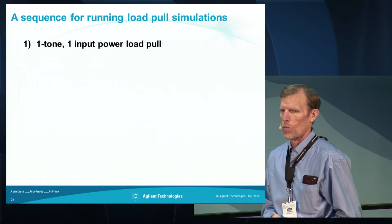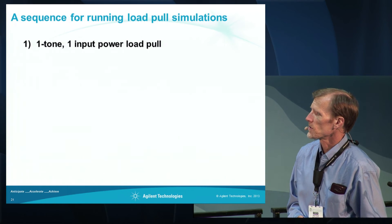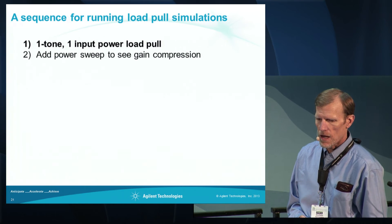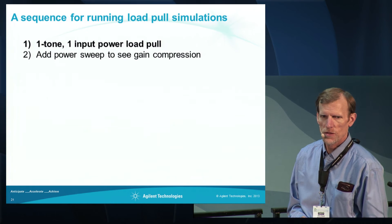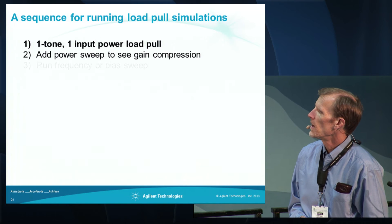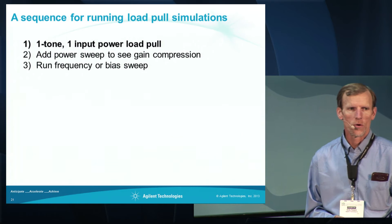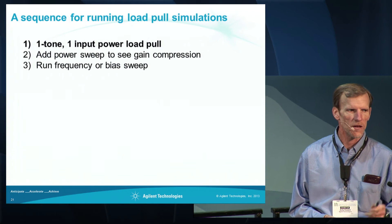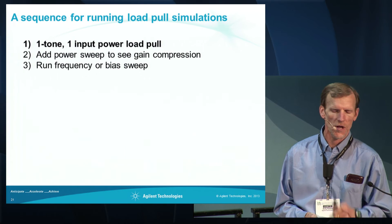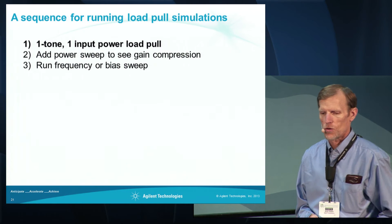You could start off with a one-tone, one input power load-pull. This is the fastest simulation because it doesn't include any sweeps other than of the load. Then you could add a power sweep to see gain compression, which is an important specification that almost everyone is concerned about. You could add a frequency or a bias sweep to see performance across a band of frequencies — if you're designing a power amplifier across a band, you need to consider performance at multiple frequencies, not just the center frequency.